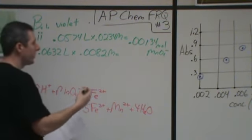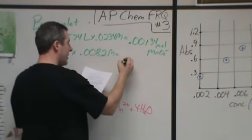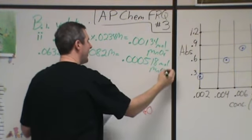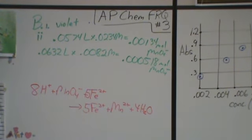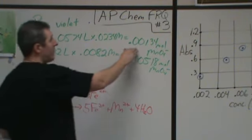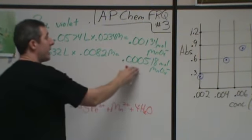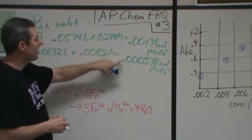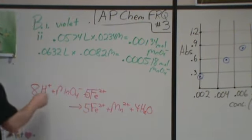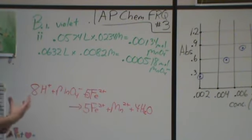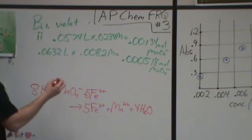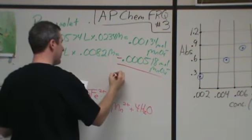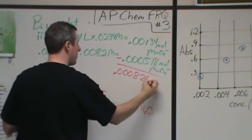Then it says after the reaction is over, you do an experiment and you find that you now have 0.0632 liters and you have 0.0082 molar concentration. So distinguishing what these are is going to be the tricky part of this. Now if I multiply that out, it comes up to 0.000518 moles of permanganate. So now the question is what are those numbers? So the idea is that this is how many moles of permanganate you began with, and then this is how much you end with.